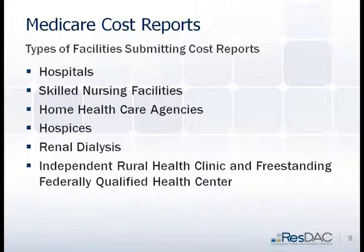What types of facilities submit cost reports? Hospitals, skilled nursing, home health, hospice, renal dialysis, and independent rural health clinics or freestanding federally qualified health centers — all submit cost reports and have downloadable data. Freestanding ASCs do not have to submit cost reports, so you won't find any freestanding ASC information there. If the ASC is part of a hospital, you might see a line item indicating ASC.